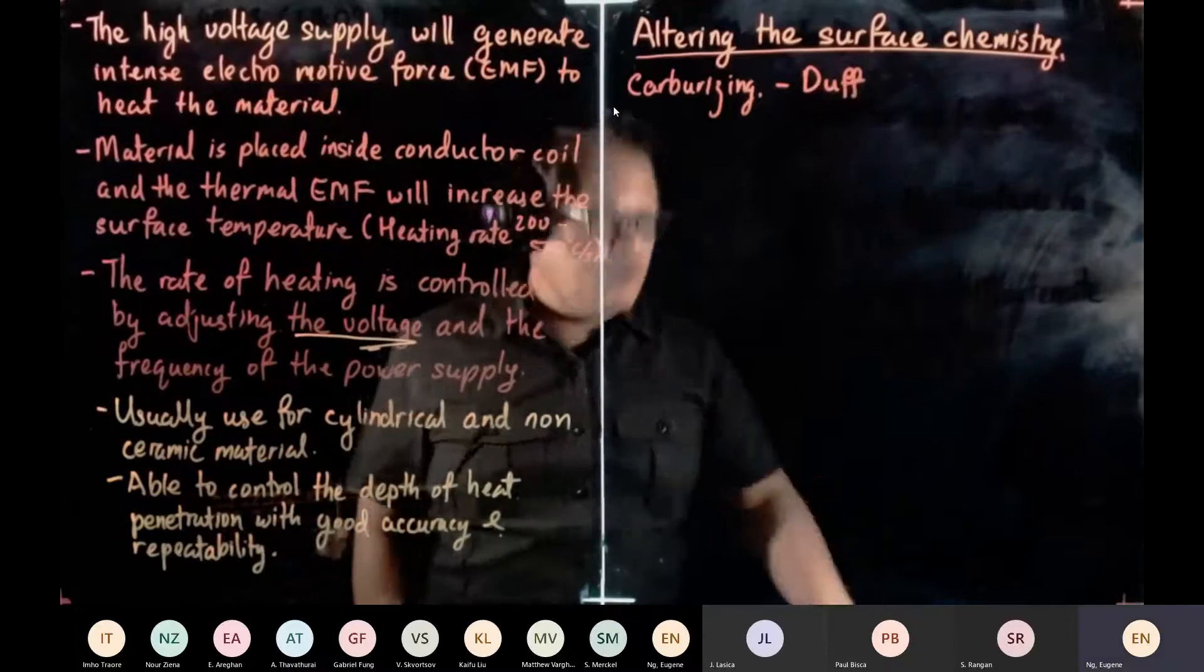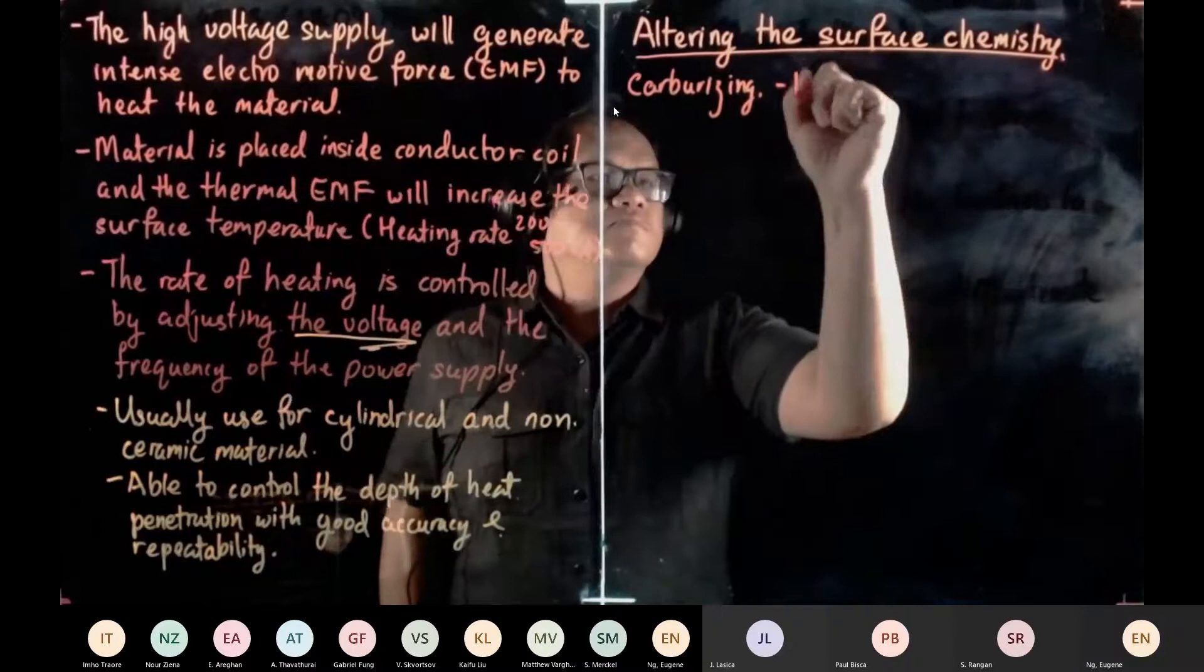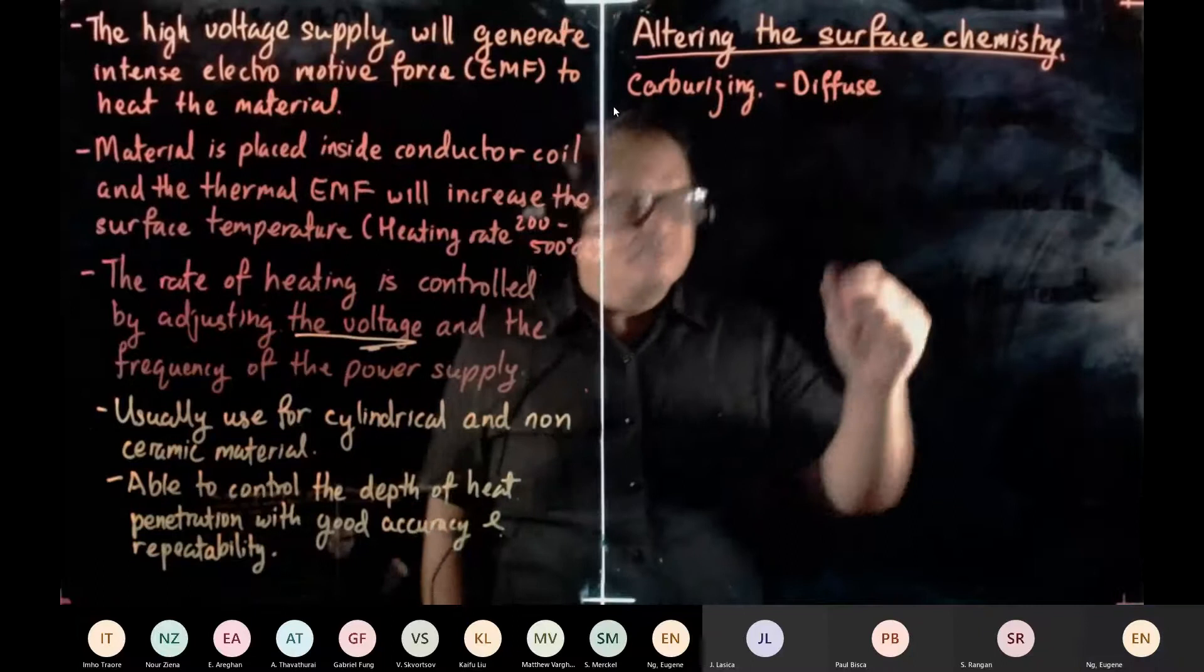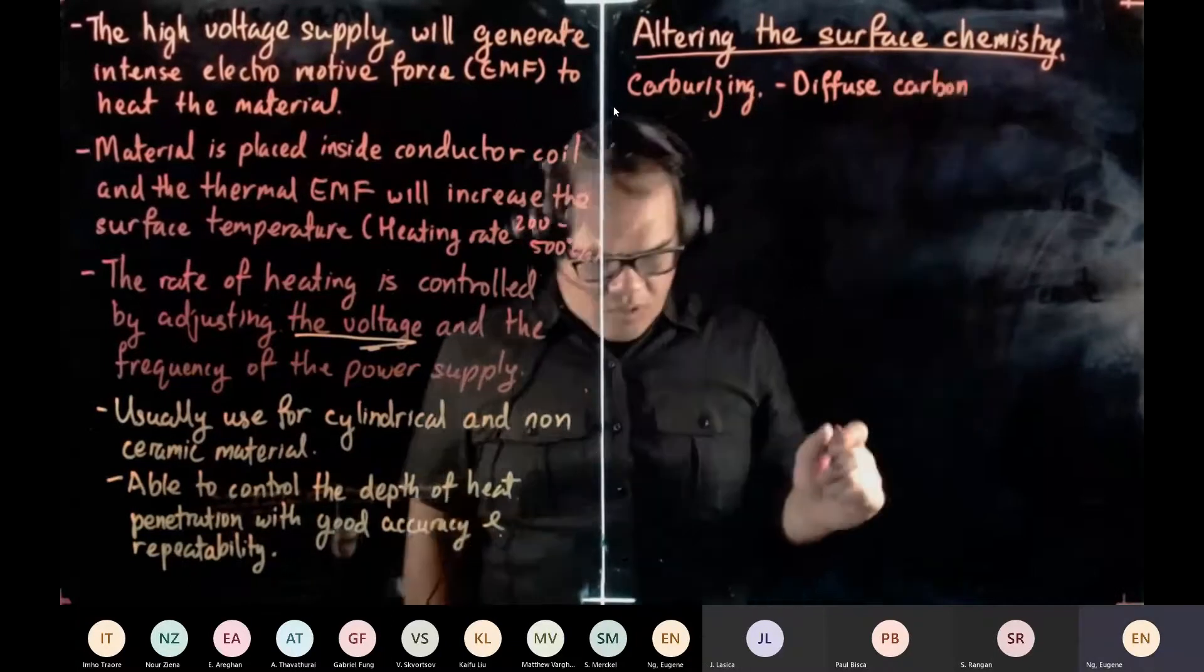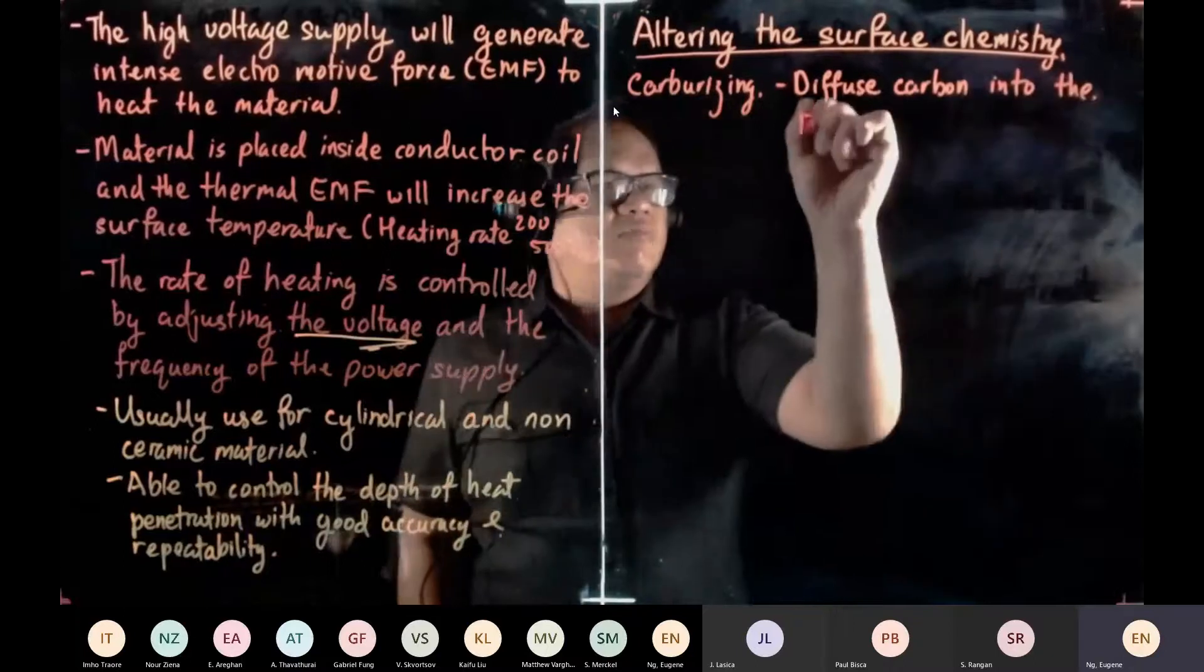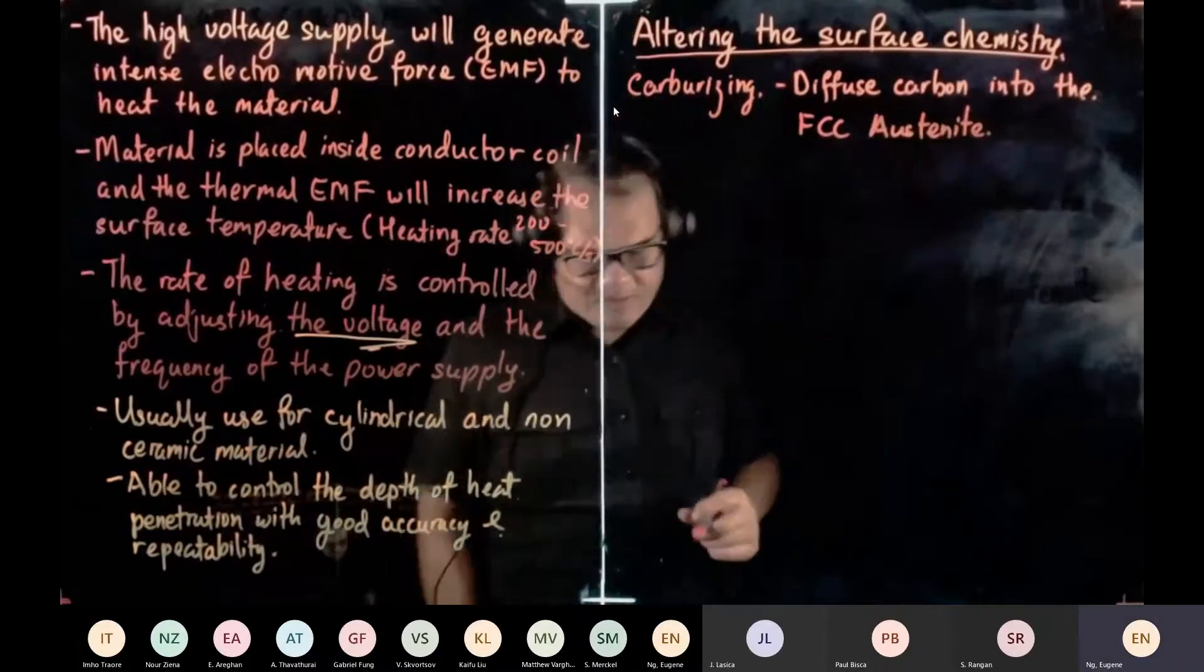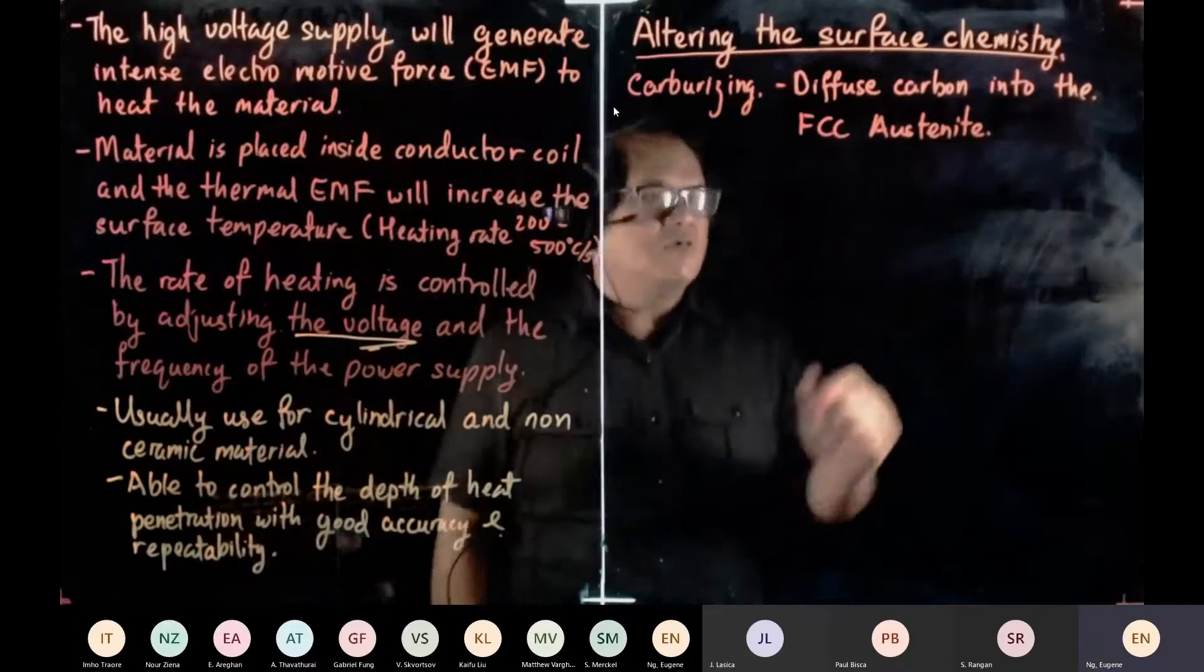We're going to diffuse carbon into the FCC austenite. It has to be FCC because it's less densely packed, austenite phase.